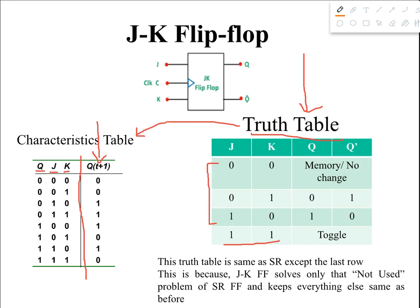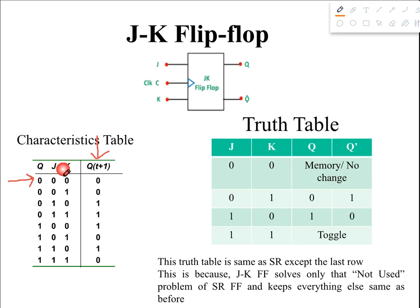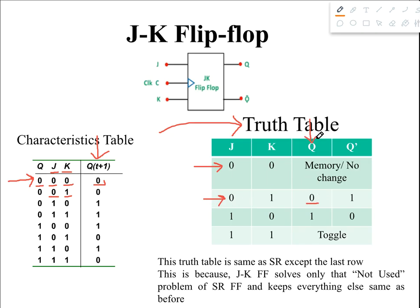Let's figure out how we determine the next state values. In the first row, J and K are both 0. Going back to the truth table for J=0, K=0, the output is memory/no change — so the present state value is unchanged. With a present state of 0, the next state is also 0. For J=0, K=1, the truth table gives output 0, so the next state is directly 0.